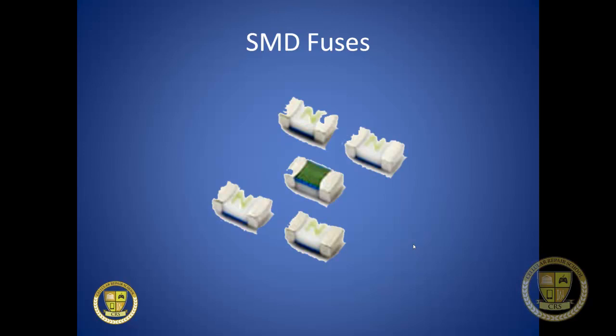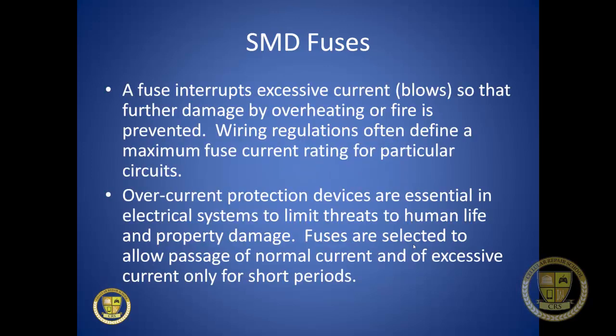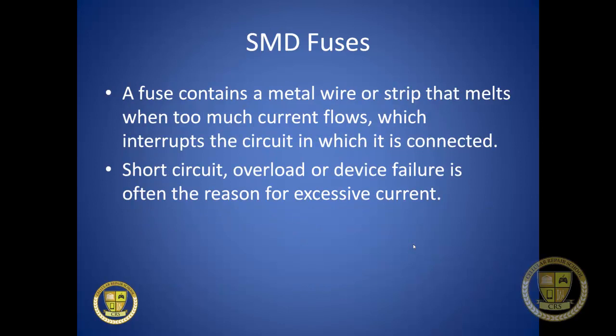SMD fuses — here are a couple of styles. They are usually marked green, but not always. A fuse interrupts excessive current so that further damage by overheating or fire is prevented. Wiring regulations often define a maximum fuse current rating for particular circuits. Overcurrent protection devices are essential to limit threats to human life and property. A fuse contains a metal wire or strip that melts when too much current flows through it, interrupting the circuit. Short circuit, overload, or device failure is often the reason for excessive current.